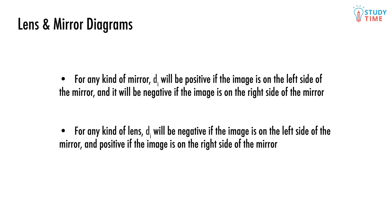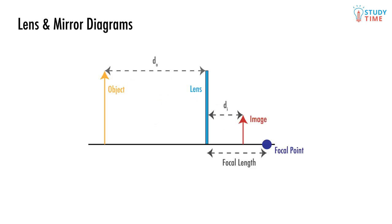So they're just the reverse of each other. You can remember this by thinking in a mirror, the light rays are supposed to bounce back, right? So it's normal for the image to be on the same side as the object, and so in this situation d_i is positive.